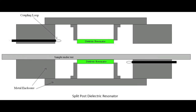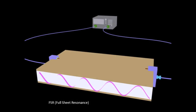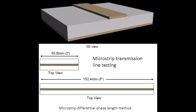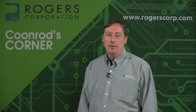The split post dielectric resonator (SPDR), shown in the lower left, is a perturbation resonator method. You first test the empty resonator as a reference baseline, then insert the material to be tested. The material shifts the center frequency and Q, and that shift allows you to determine the dielectric constant. The FSR (full sheet resonance) test, upper right, tests the copper-clad laminate itself, which behaves as a loaded parallel plate waveguide. A standing wave is established, and from the resonant peak and panel dimensions you calculate the dielectric constant. Finally, the microstrip differential phase length method uses two microstrip transmission lines, identical in every way except length, and from their phase response and circuit dimensions you back-calculate the dielectric constant.